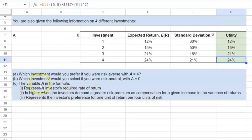So yes, this is true. The higher is the value of A, the higher is the risk premium that they would require as compensation for a given increase in the variance of returns.